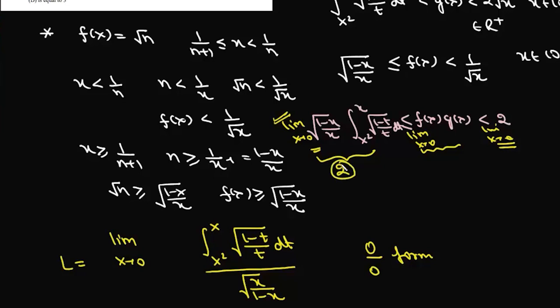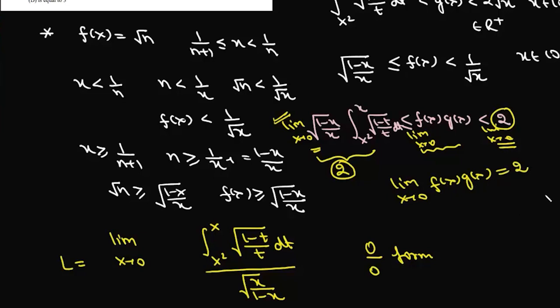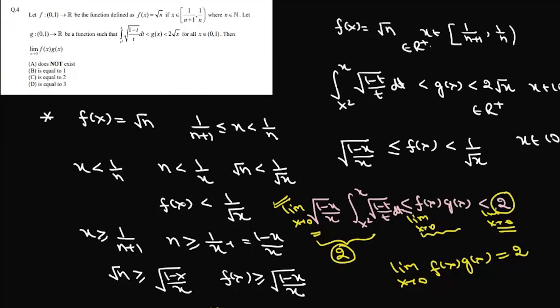The limit on the left-hand side is 2 and the limit on the right-hand side is also 2. Using the sandwich theorem or squeeze play theorem, we conclude that the limit as x→0 of f(x)·g(x) is equal to 2. So the answer to this question is option C.